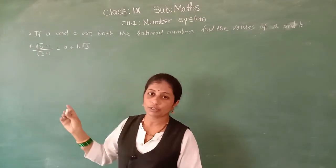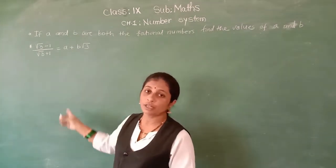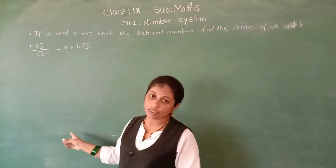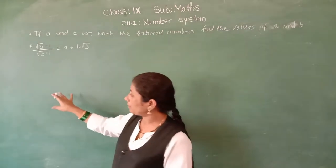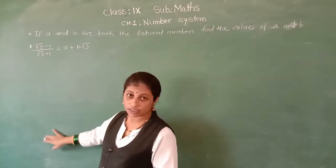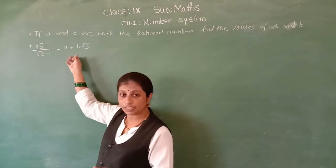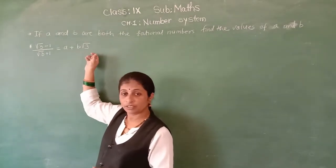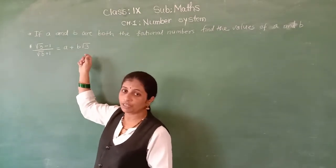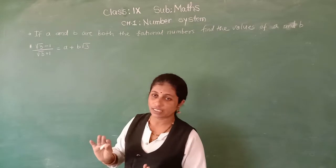Then we have to compare that final product with the right side, and from that we have to take the A and B values. That's it.